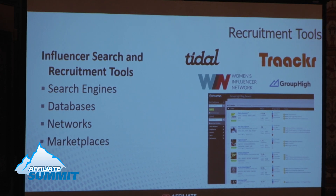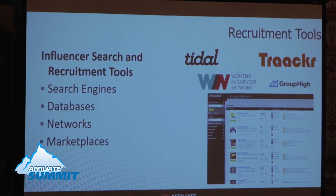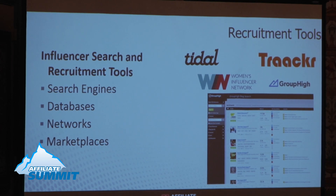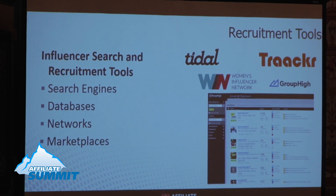Once you've identified what you're looking for in an influencer, we get into recruitment — best tools and best practices. You've planned your campaign and know what you're looking for. How do you find influencers? This can be very time-consuming and is dictated by the resources you have. The first option is search engines — Google, Bing, Yahoo — or for social influencers, pounding the pavement through Instagram, Facebook, and Twitter. The plus is it's free and accessible to everyone. The downside is it's incredibly manual and you may miss things.